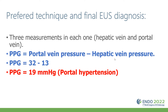To calculate the PPG, it is a simple math operation. You subtract the mean of the portal vein measurements minus the mean of the hepatic vein measurements. For our patient, it was 32 mmHg in the portal vein minus 13 mmHg in the hepatic vein, giving a final PPG value of 19 mmHg, which represents portal hypertension.